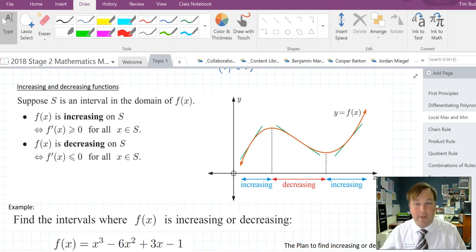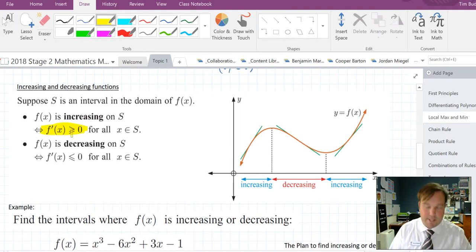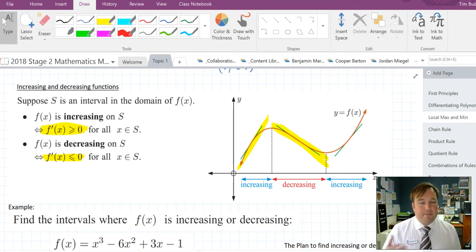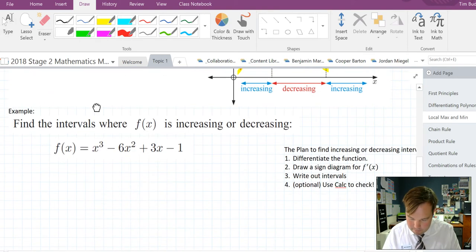Sometimes we want to know where the function is increasing and where it's decreasing. Very simply, if the derivative of a function is greater than zero, then the function is increasing. And that makes sense, a positive slope on the tangent means the function is going up, a negative slope on the tangent means the tangent is going down. And we do this, we indicate increasing and decreasing with a sign diagram. So we can see here that this is going up, down, up.